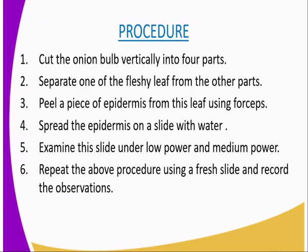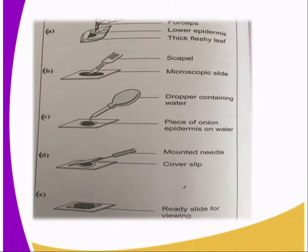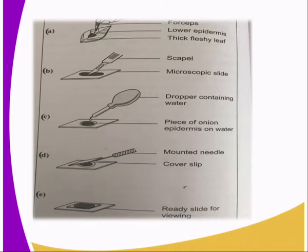For the lesson to be a success, when preparing the slides there is a procedure required for us to have the best results. We are going to have a diagrammatic representation as I explain. The first step, as you can see in the first diagram, is cutting the onion bulb vertically into four parts. The second procedure: you separate a fleshy leaf from one of the parts after cutting the vertical bulb.